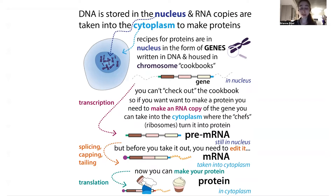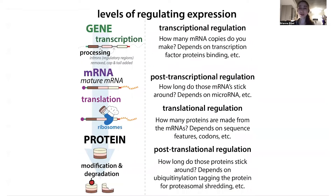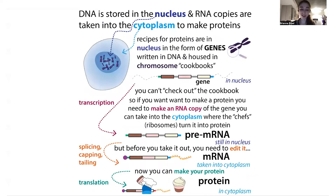Let's go into a little more detail. You can also regulate how much of that protein is actually made from those messenger RNA copies, so you have levels of regulation at every step. The process of making messenger RNA is called transcription — we're transcribing from DNA to RNA, both in this nucleic acid language. Then later we translate it into protein, going from nucleic acid language into the amino acid language of protein, and that step is called translation.